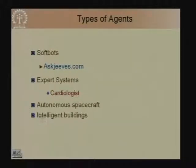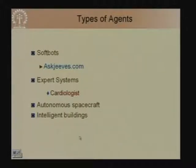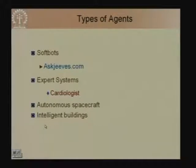Other than software agents we have robots such as autonomous spacecrafts like the Mars rover discussed in the last class. There are also intelligent buildings which have intelligence built into them to decide lighting conditions, air conditioning, and so on.